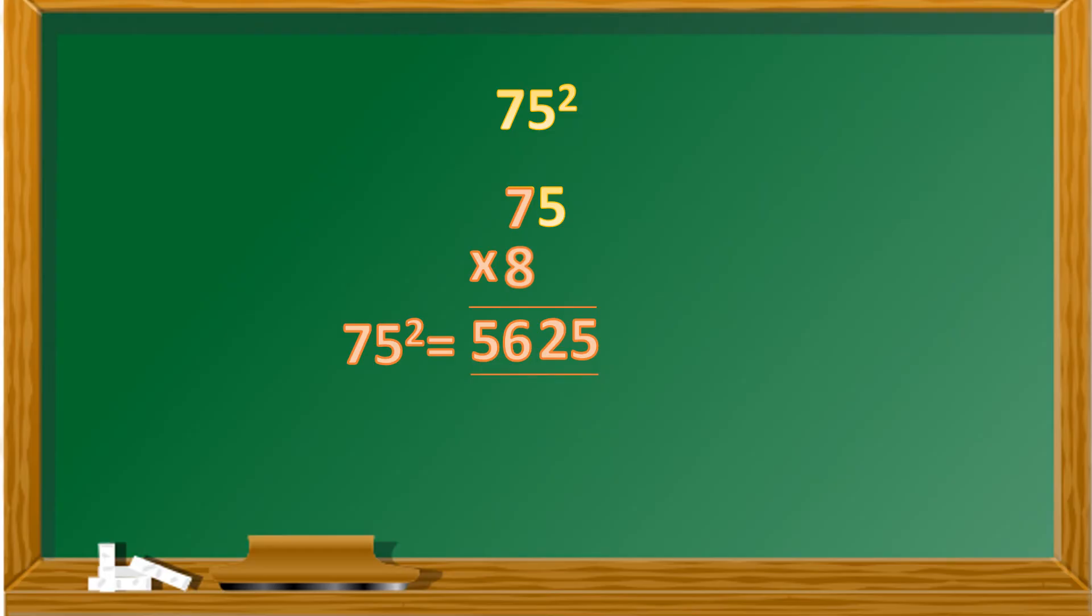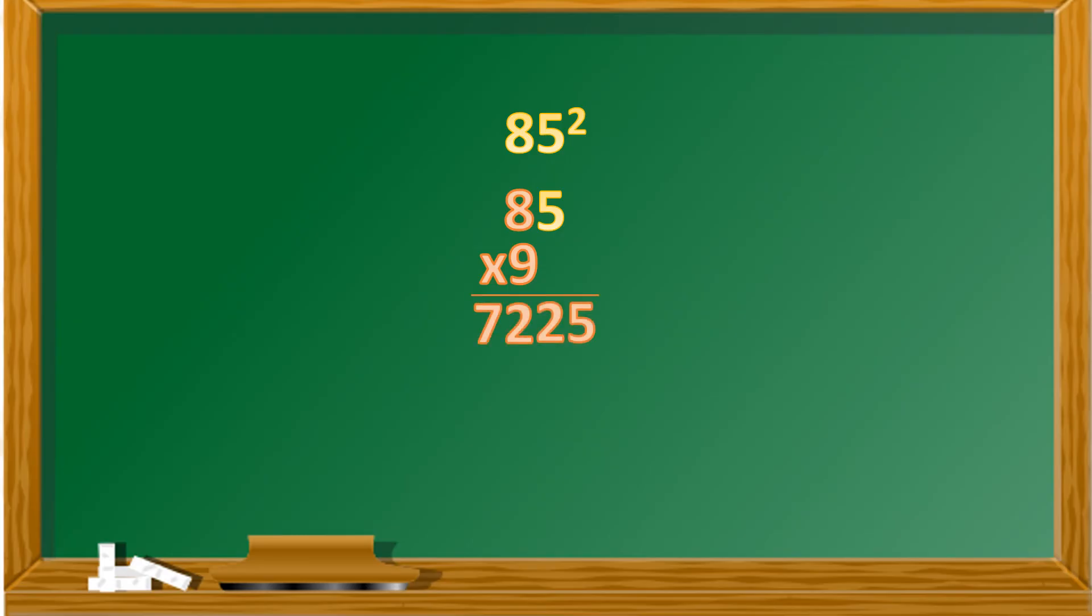Now if you got the idea we can do it a little quickly for the following number. Let us try for 85. To calculate the square of 85 we shall write 85 and mark the number other than 5. Now multiply this number by the next number that is 9. 8 times 9 gives us 72. Suffix 25 and we shall get 7225 which is the square of 85.